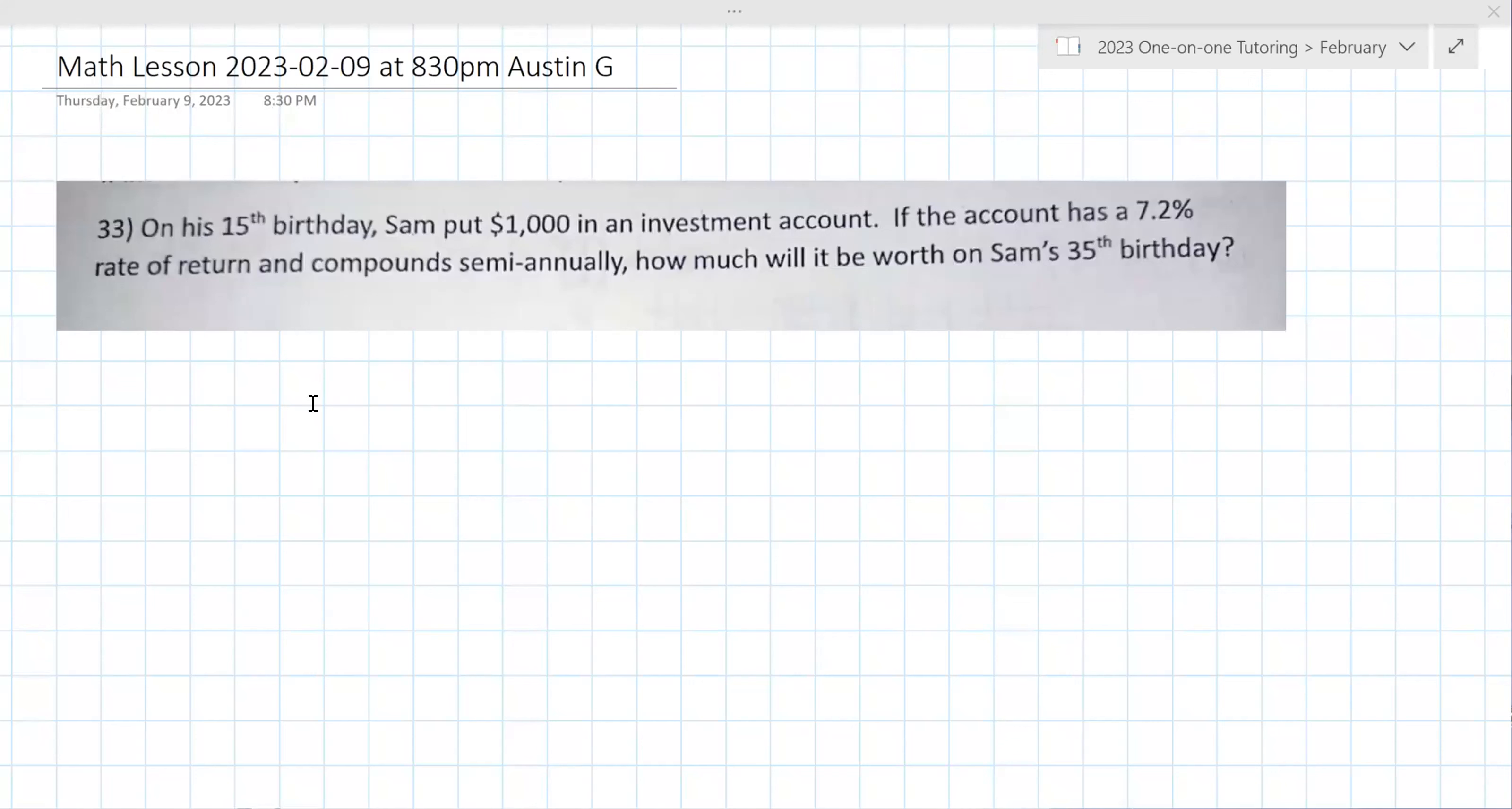On his 15th birthday, Sam put $1,000 in an investment account. If the account has a 7.2% rate of return and compounds semi-annually, how much will it be worth on Sam's 35th birthday? So you were probably given this formula or it's in your book. Do you know if you're going to get an equation sheet? We don't get an equation sheet. We have to memorize it.